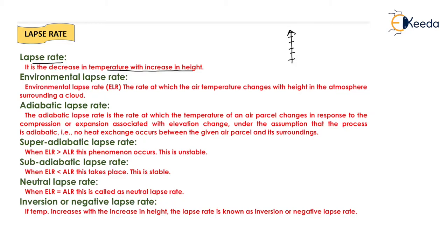Now, what is environmental lapse rate? We keep a balloon and fit a thermometer inside it to measure the decrease in temperature of the outside environment, which will send data back to us on the ground. We then send this parcel up into the atmosphere. The thermometer records the decrease in temperature of the outside environment, and that decrease in temperature is known as environmental lapse rate.